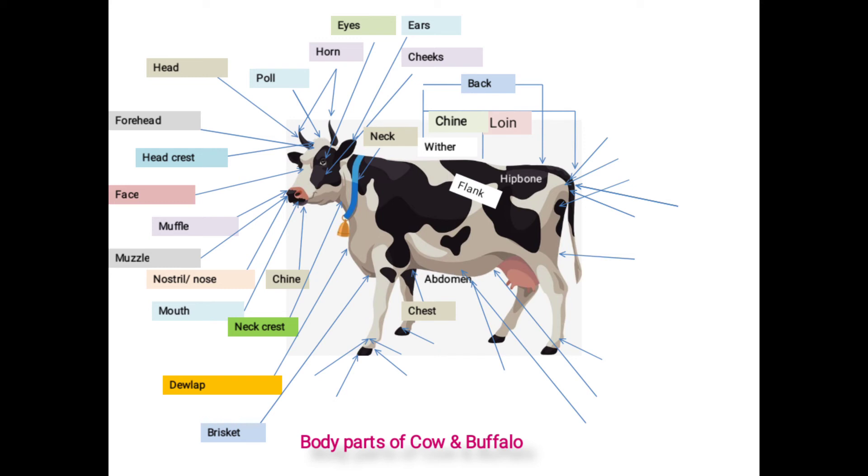Fourth region, that is limbs or quarters. It includes fore quarter and hind quarter. Fore quarter: this region has an importance in selecting the animal for draft quality. Fore quarter means forelegs or front legs.